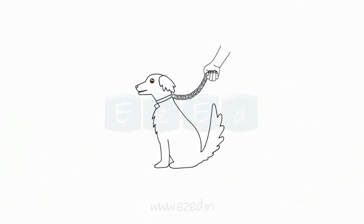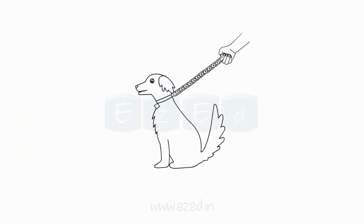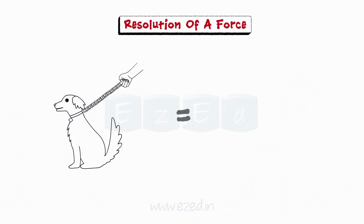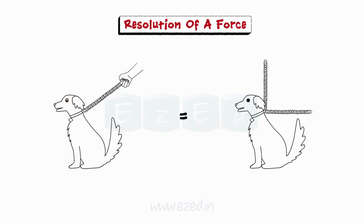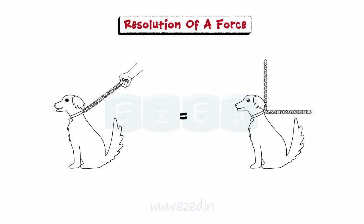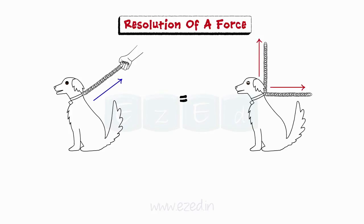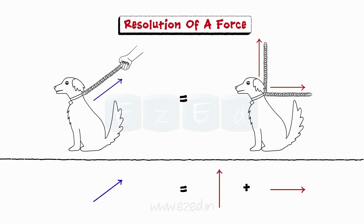Consider Tommy's chain is pulled tight by his master. The influence of the chain on his body is equivalent to the force of two chains — one pulling upward and the other pulling rightwards. If the single chain were replaced by two chains with each chain having the magnitude and direction of the components, Tommy would not know the difference, because the combined influence of the two components is equivalent to the influence of the single force. This is called resolution of a force.